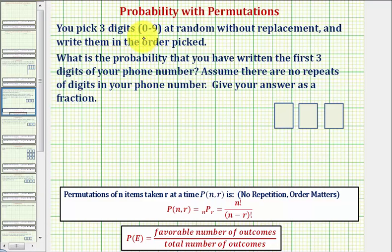You pick three digits from the digits zero through nine at random without replacement and write them down in the order picked. What is the probability that you have written the first three digits of your phone number? Assume there are no repeats of digits in your phone number and we're also asked to give the answer as a fraction.